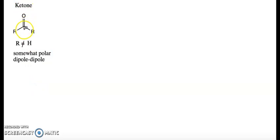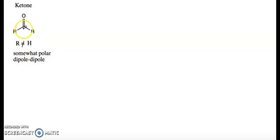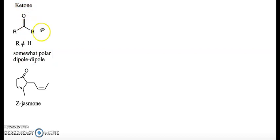Ketones have the general form C=O with two R groups on it, and neither R group can be H — they must be carbon-containing. These molecules are somewhat polar because of the dipole-dipole interaction: the carbon is less electronegative than the oxygen, making it partially positive and the oxygen partially negative. An example is Z-Jasmon, which has the aroma of jasmine.